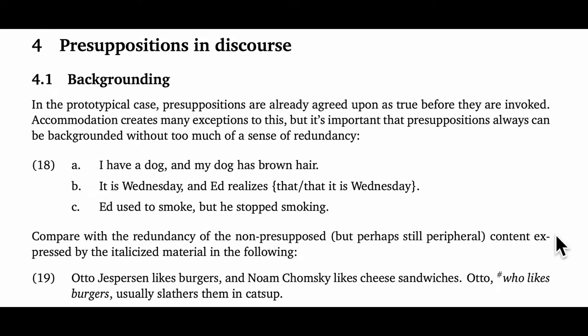For comparison, consider the non-presupposed but still peripheral content expressed by the italicized material in the following example: 'Otto Jespersen likes burgers and Noam Chomsky likes cheese sandwiches. Otto, who likes burgers, usually slathers them in ketchup.' Here it seems really repetitive to say 'who likes burgers,' right? This content isn't presupposed but rather conveyed indirectly, so it's redundant given the first sentence. For presuppositions, though, there's generally no sense of redundancy, because after all presuppositions are supposed to be backgrounded.